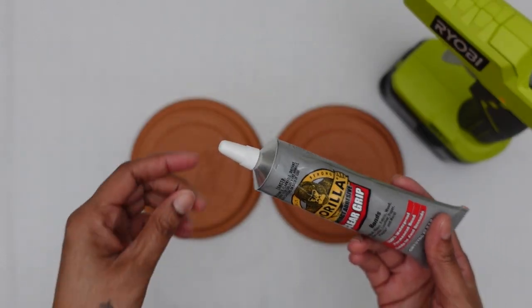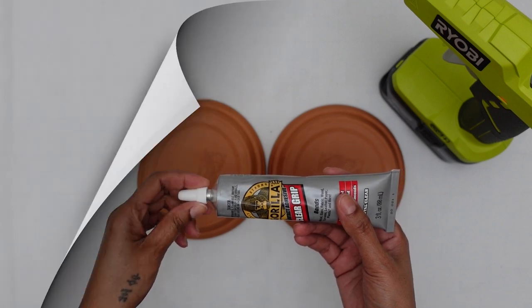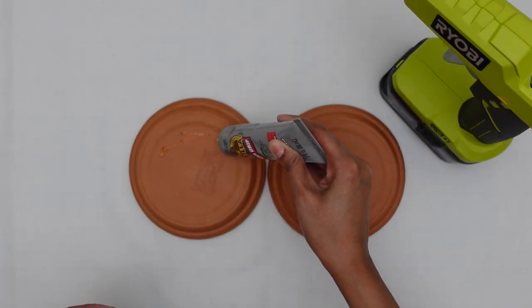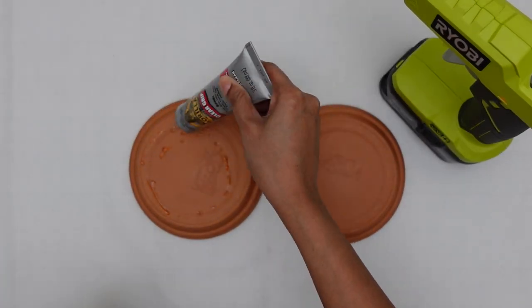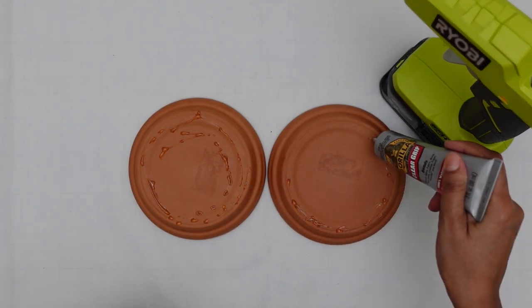I started off by turning my saucers upside down. Then I went ahead and applied the Gorilla Glue. This is a strong bonding glue that holds in seconds. I applied the glue on both saucers.